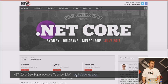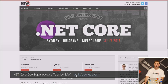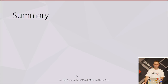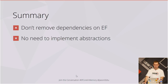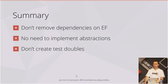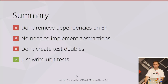We've also got .NET Core Dev Superpowers coming up at the end of July in Sydney on the 27th — it's a full-day event for $49 where we'll teach you everything you need to get up and running with the .NET Core stack. In summary: you don't need to remove your dependencies on Entity Framework — use the DB context directly. You don't need to implement abstractions or create test doubles. You can inject your DB context into controllers and use it in your unit tests. If you've got a method for seeding your DB context in development, you can reuse it for testing. That only leaves one thing — just write the unit tests. Thank you.